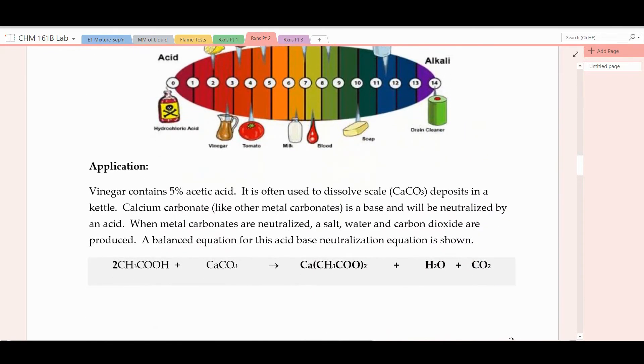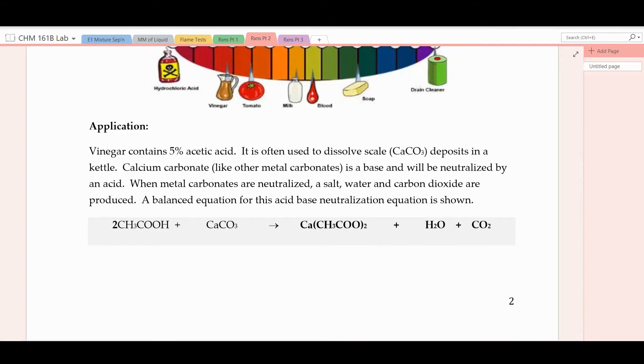Here's a domestic application of a neutralization reaction. Vinegar contains 5% acetic acid. And it's often used to dissolve scale. Typically, mostly calcium carbonate deposits in a kettle. And calcium carbonate, like other metal carbonates, is a base and will be neutralized by an acid.